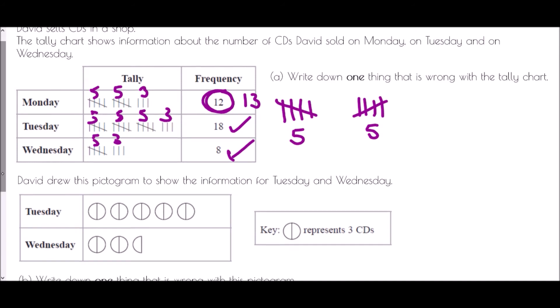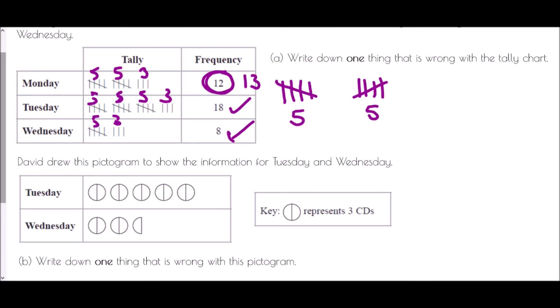We then have that David drew a pictogram to show the information for Tuesday and Wednesday. And he has said in his key that a circle split into two pieces represents three CDs. And so write down one thing that is wrong with this pictogram. Well if we look at Tuesday, this is meant to show eighteen people or eighteen CDs. Well if that is the case that will be three and three and three and three. Well if I count that up, three, six, nine, twelve, fifteen. That is only showing fifteen at the moment. So that is a problem.